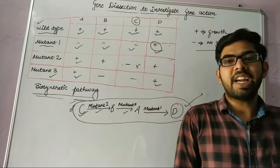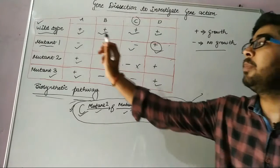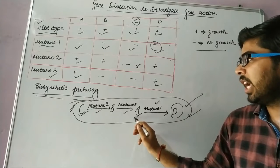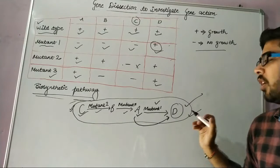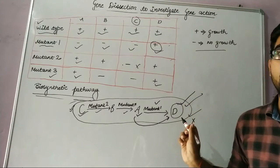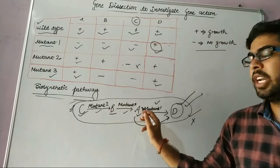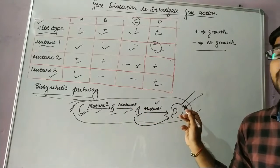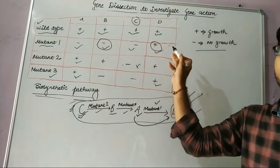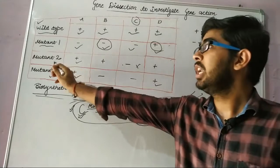Now we can verify whether our pathway is correct. For mutant 1, when grown with A, mutant 1 cannot carry out conversion to D, so there is no growth, since D is the end product necessary for growth. When B is added, B is converted into A but A is not converted into D — no growth. Similarly for C. But when D is added, growth is found because the end product is already supplied.